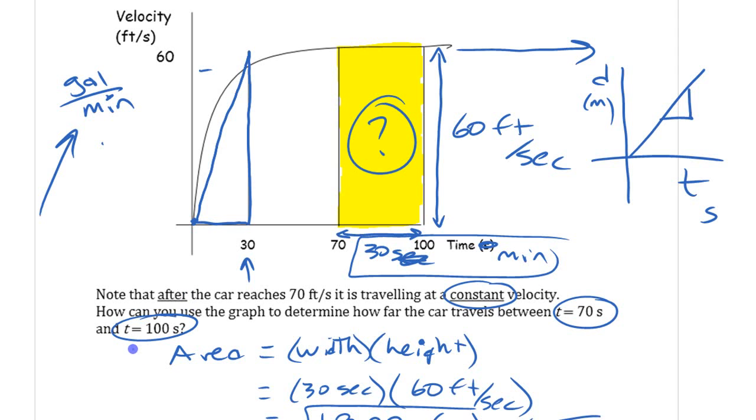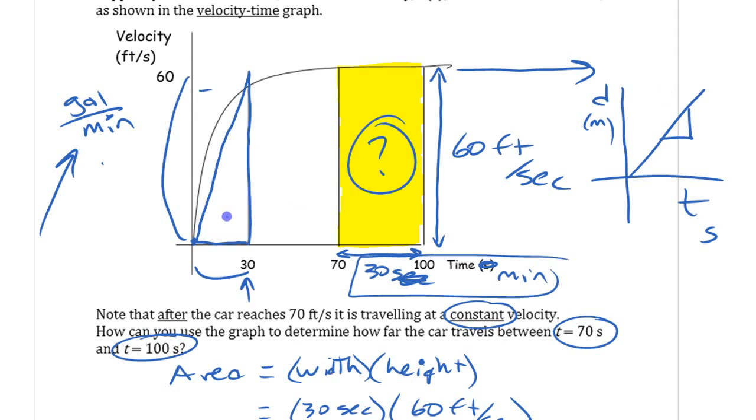If this is 30 and this is 60, then that triangle is half of that, half of 1,800. That area. It's a bit more than that. So half of 1,800 - 900 feet, maybe more than that, 1,000 feet, something like that.